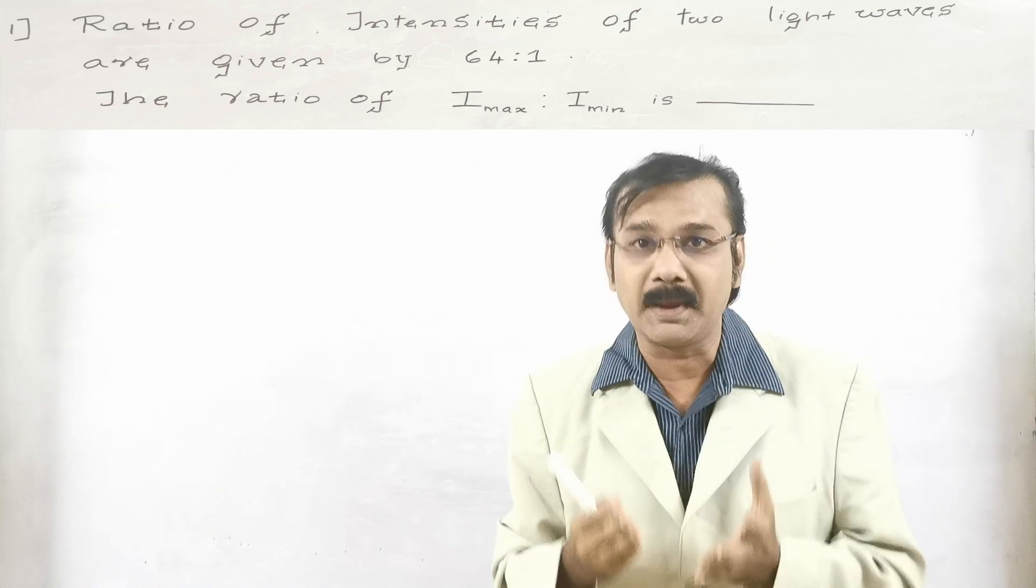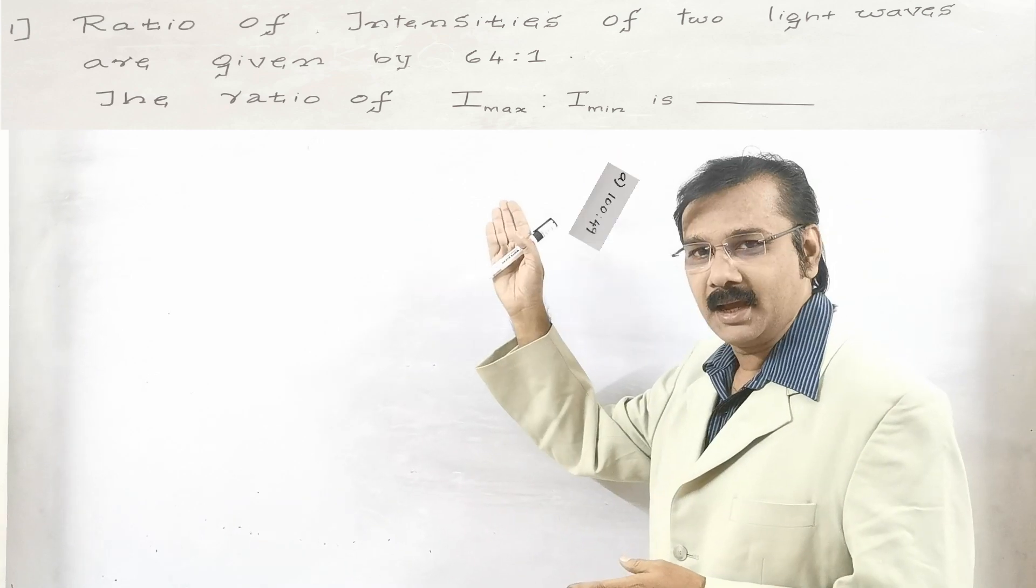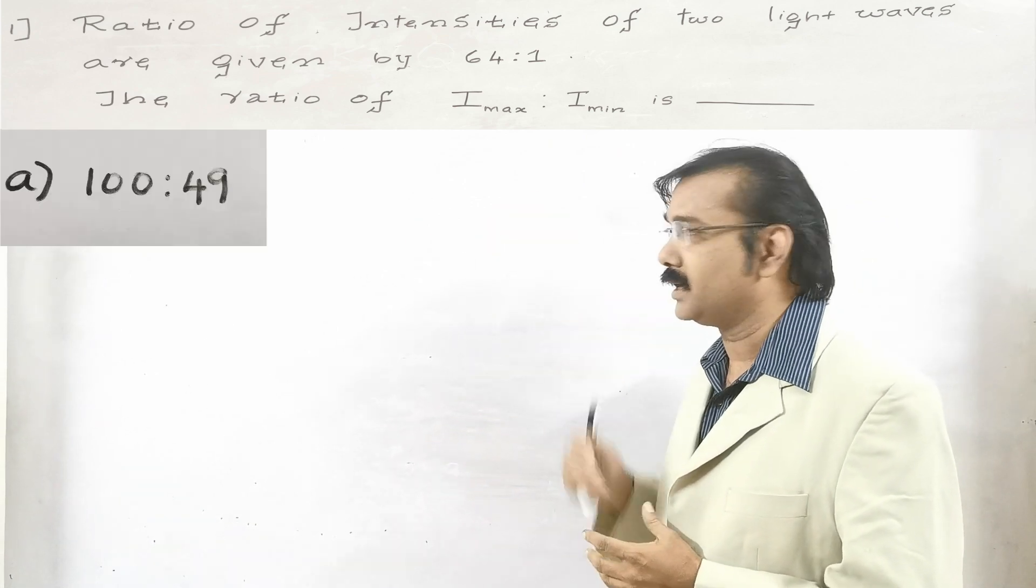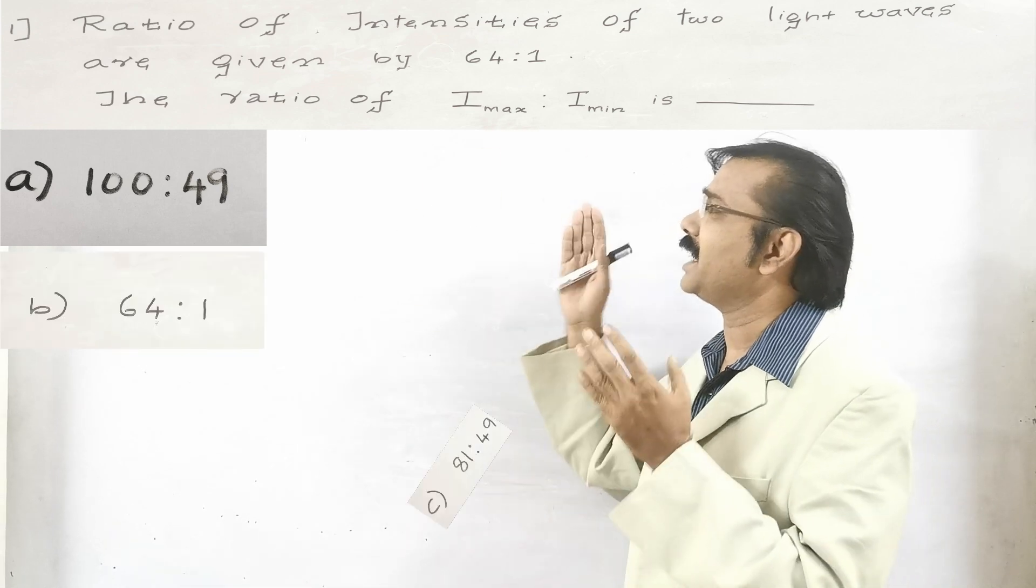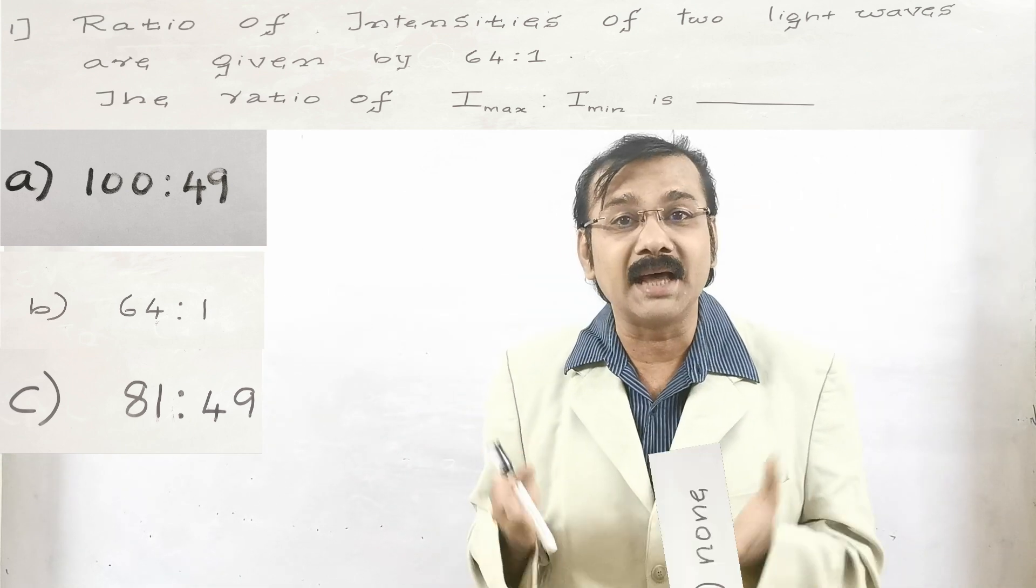That is ratio of Imax by Iminimum. The options are: A, it is 100 is to 49. B, it is 64 is to 1. And C, it is 81 is to 49. And finally, it is given as none.